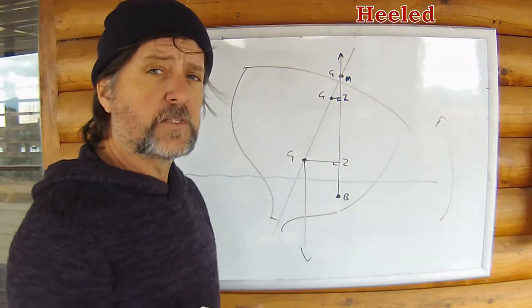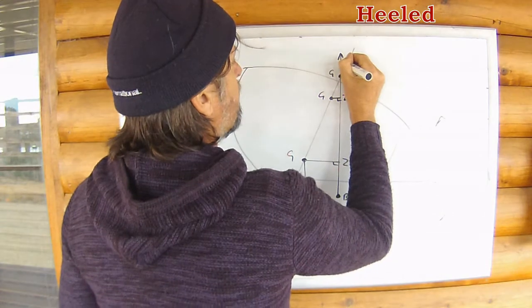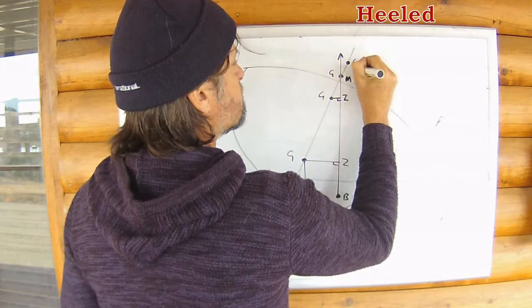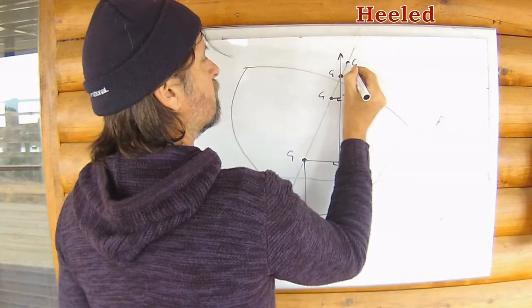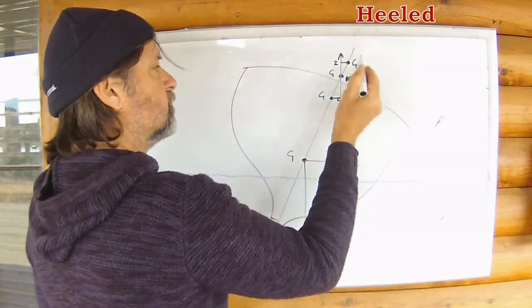But if we proceed to an unstable vessel, we now, of course, G, and I'm going to again exaggerate this, G is going up the center line, but look at where Z has to be. It's reversed.